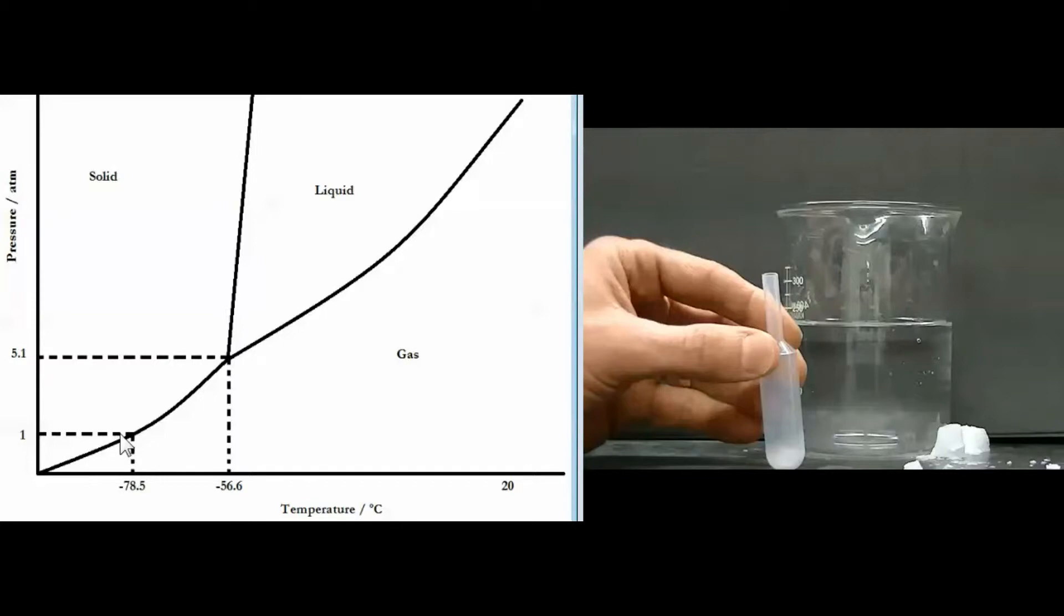Now of course if we take a piece of dry ice and stick it on the lab bench like this piece over here in the picture that piece of dry ice is going to warm and so it's going to go from minus 78.5 Celsius to higher temperatures. Of course the pressure on it's going to stay the same just atmospheric pressure.